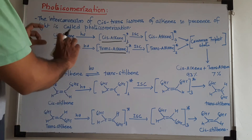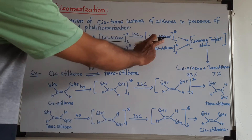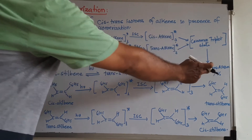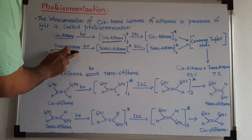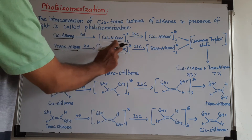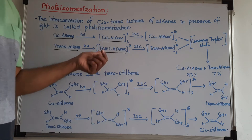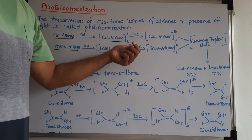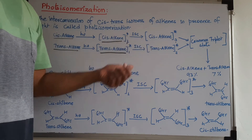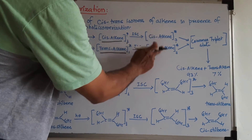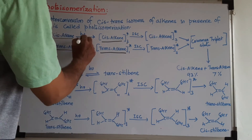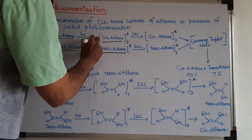When a cis alkene is converted to the triplet excited state, it can then become trans alkene. Similarly, when we take a trans alkene and irradiate it with light of a certain wavelength, it follows the same journey — going to the singlet excited state and then to the triplet excited state via inter-system crossing. These two triplet states are actually common.